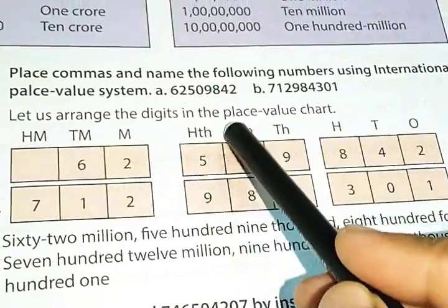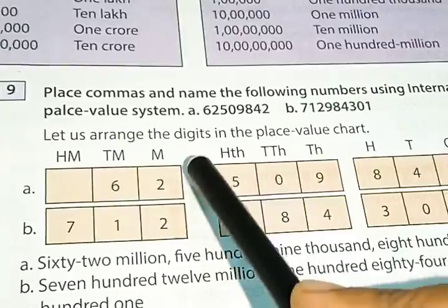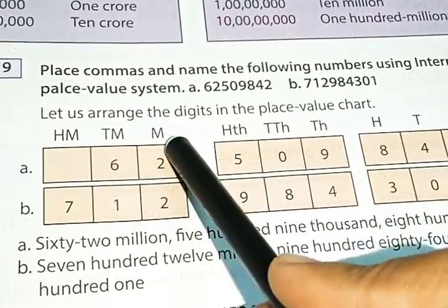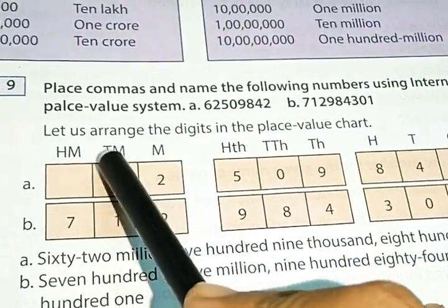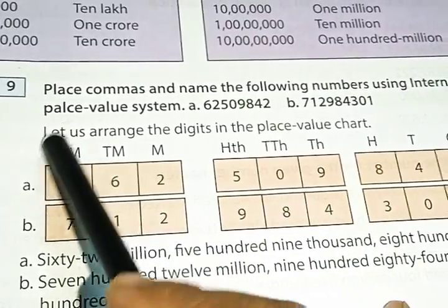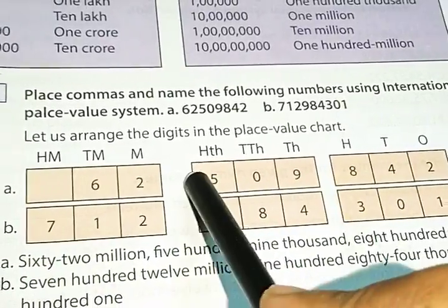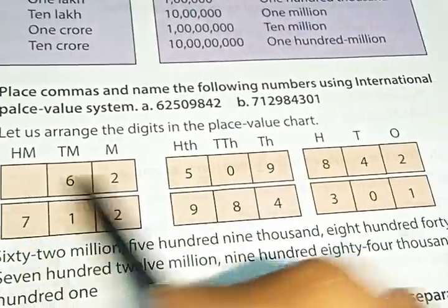In the place of lakhs, there is hundred thousands. Same way, at the place of 10 lakhs, there is million. Again, at the place of crore, there is 10 million. And again, at the place of 10 crores, there is hundred million. That is the international place value system. And you have to learn the system.